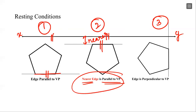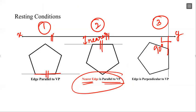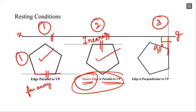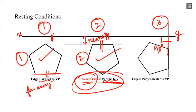The condition here is one of the base edges is parallel to VP. The third condition would be one of the base edges is perpendicular to VP. In our problem, one of the base edges is parallel to VP.